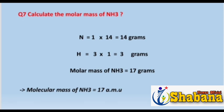To find the molar mass of NH₃: NH₃ contains nitrogen and hydrogen. The atomic mass of nitrogen is 14 grams. There are 3 hydrogen atoms, each with atomic mass 1, so hydrogen contributes 3 grams. The total molar mass of NH₃ is 14 + 3 = 17 grams. So the molecular mass of NH₃ is 17 AMU and its molar mass is 17 grams per mole.